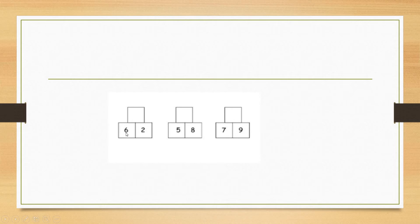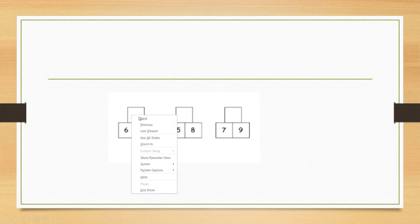Here the numbers 6 and 2. We have to combine 6 and 2. We have to take 6 in our mind and 2 in our fingers, because 6 is the bigger number and 2 is the smaller number. We have to count up after 6. 7, 8. So the answer is 8.